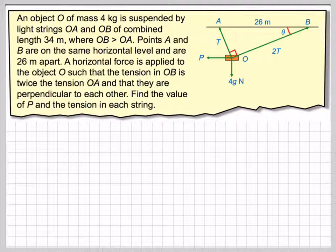Points A and B are on the same horizontal level and are 26 m apart. A horizontal force is applied to the object O, so that the tension in OB is twice the tension in OA. So this is T, then this one will be 2T, and they are perpendicular to each other, so this angle here would have to be 90 degrees.